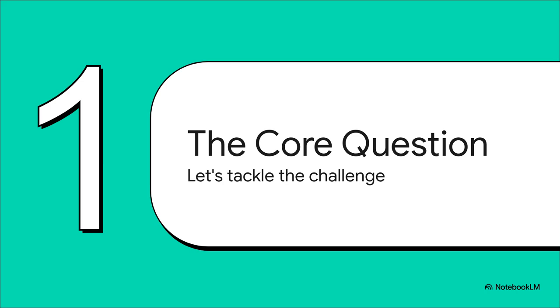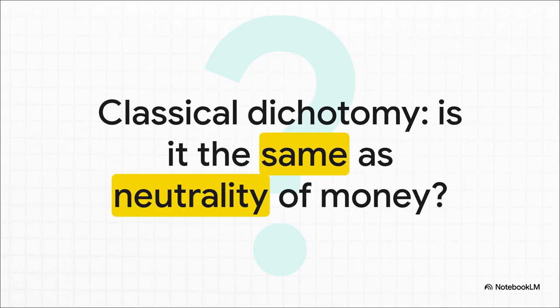First up, let's tackle the challenge head-on. Here's the core question we're deconstructing today: What is classical dichotomy? Is it the same as neutrality of money? Explain. It's really a two-part question — a definition and then a comparison. And while it seems pretty straightforward, it's that second part, that relationship between the two terms, that's the subtle trap where so many people lose easy marks.